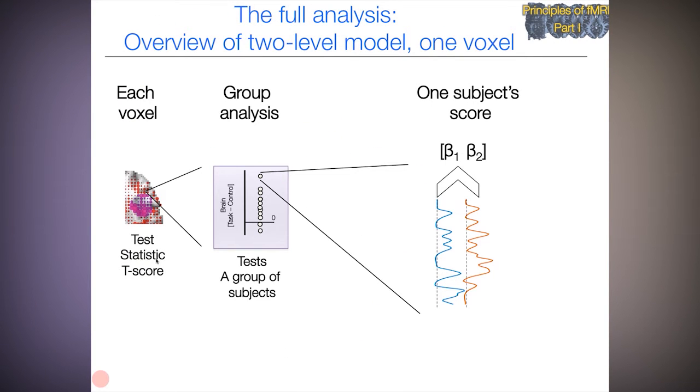There's that group analysis again. Each of those scores in the group analysis, each individual subject score, is resulting from a contrast in a general linear model analysis. This is an example with two regressors within that individual subject, which yield beta 1 and beta 2, two regression parameter estimates. Those are multiplied by a contrast of interest, in this case the difference between the two, 1 minus 1, which yields a contrast value for each subject.